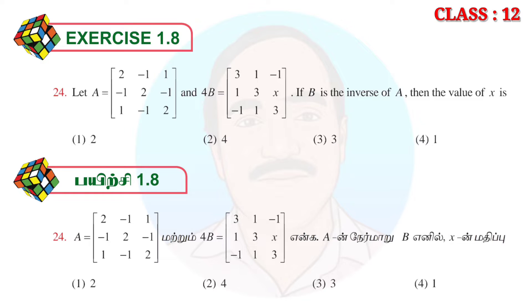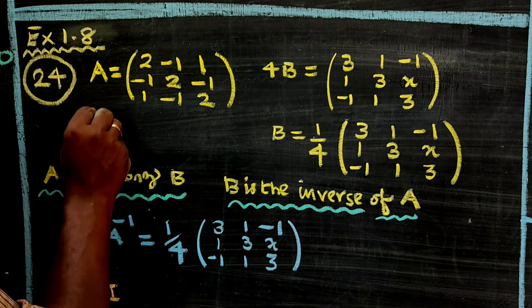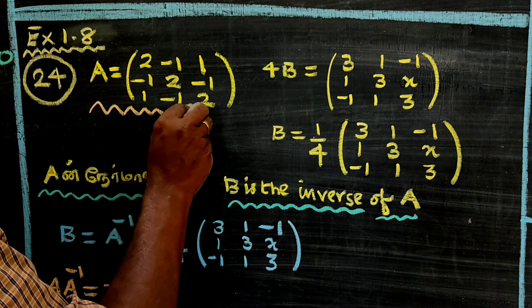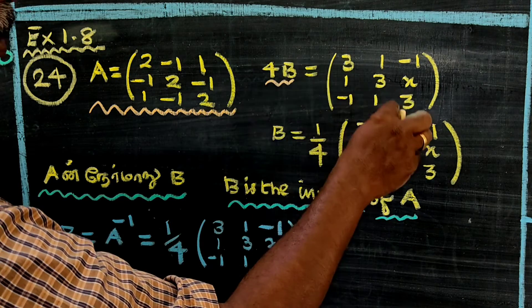A is equal to 2, -1, 1, -1, 2, -1, 1, -1, 2. And 4B is equal to 3, 1, -1, 1, 3x, -1, 1, 3. So 4 times B is equal to this matrix.